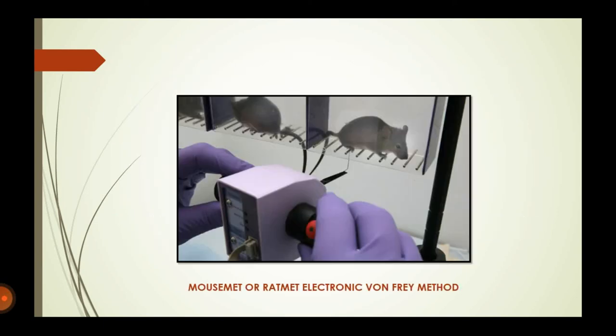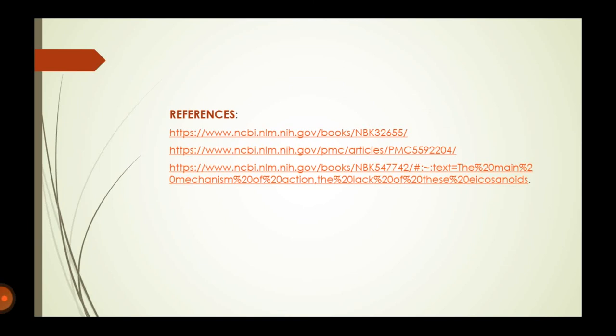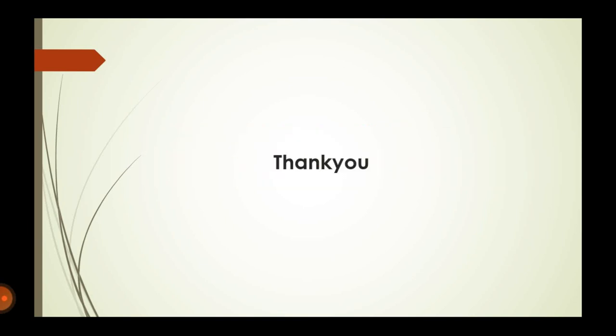As seen in the picture, this is the mouse mat or red mat electronic Von Frey method, with the transducer attached to the device and awaiting an elicited response. These are the references from which the information was collected.